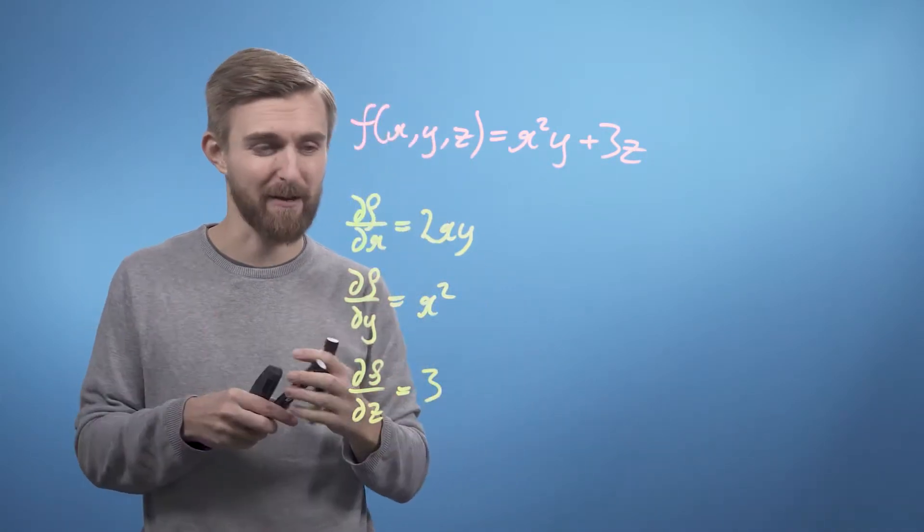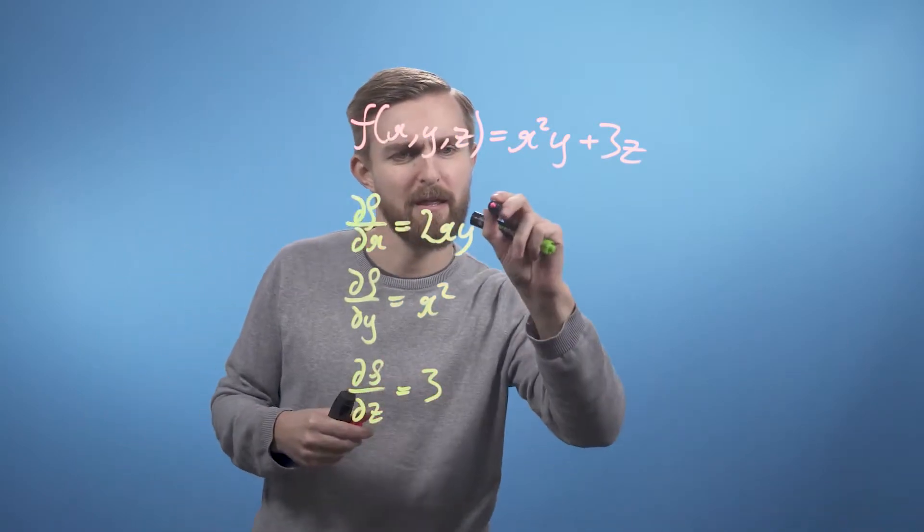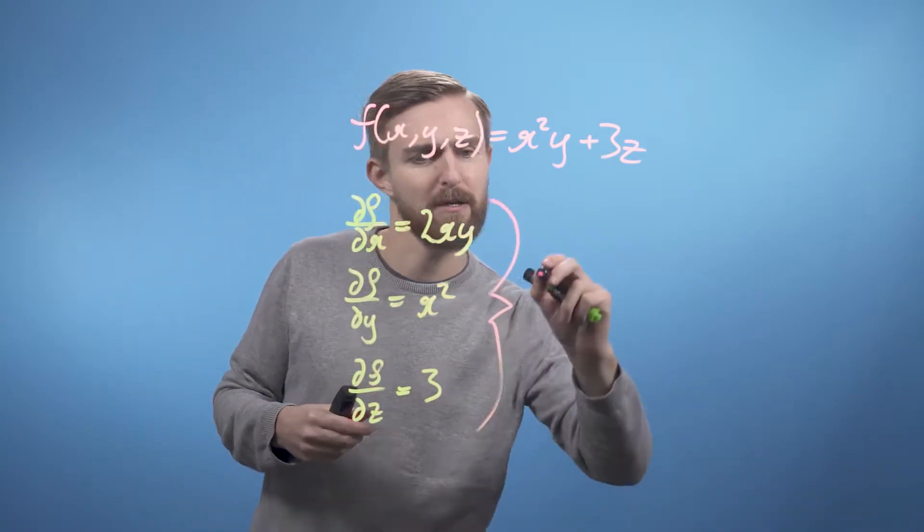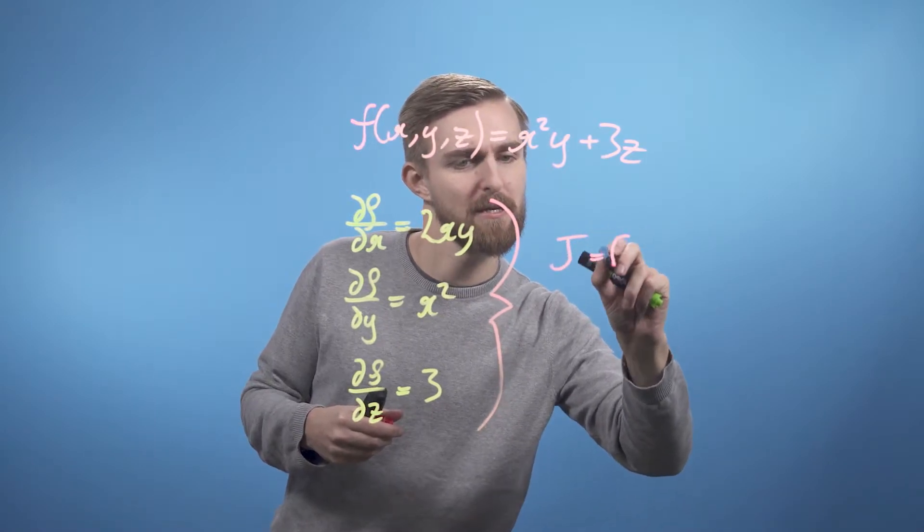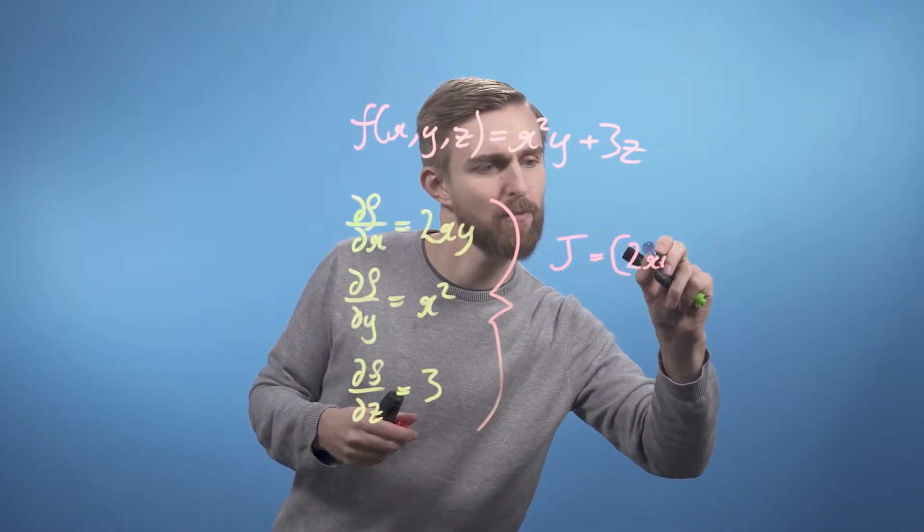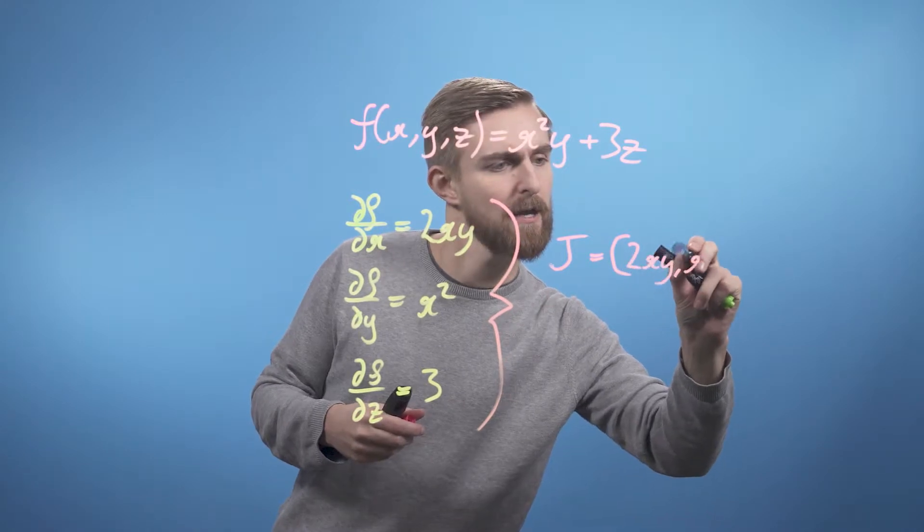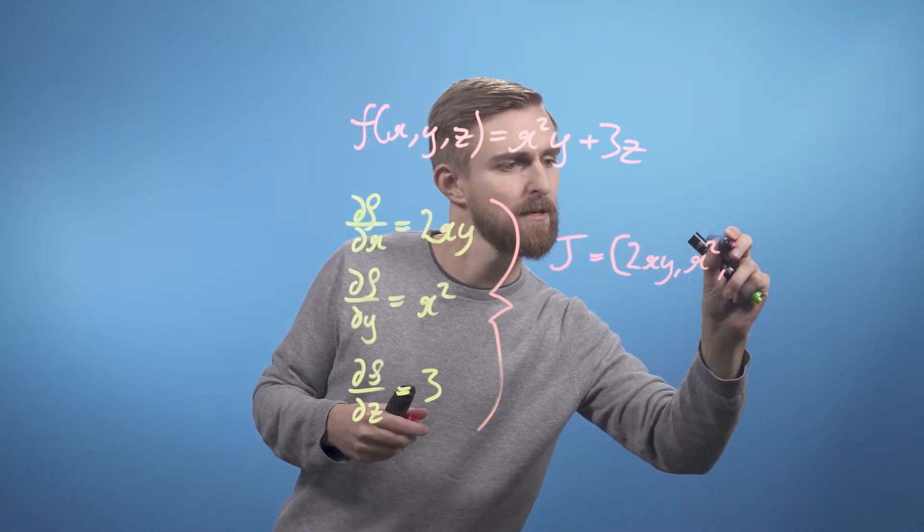Now bringing all of those together, we just end up with a Jacobian J, which is just going to be [2xy, x², 3].